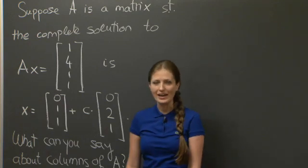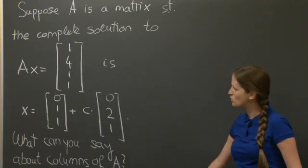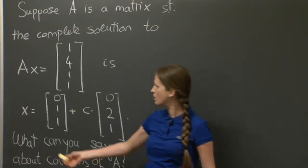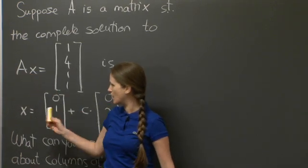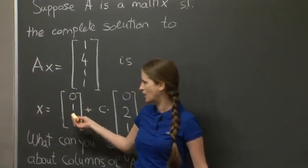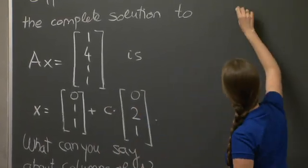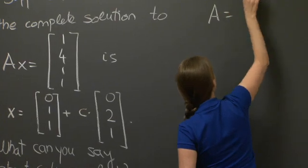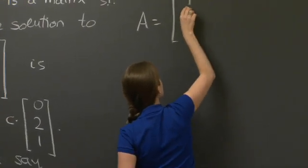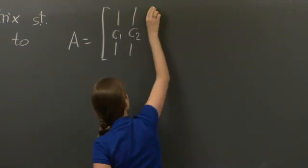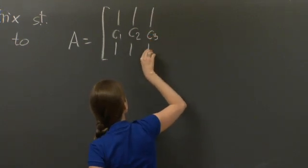OK, welcome back. So the first thing that you should think about in this sort of situation is what is the size of A? Well, we want to multiply A with an x that has three entries. So A should have three columns. Let me call those columns C1, C2, and C3.